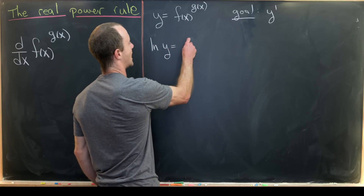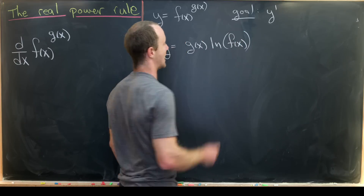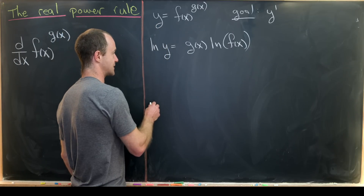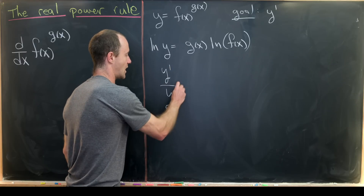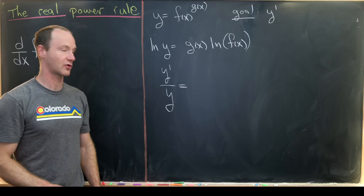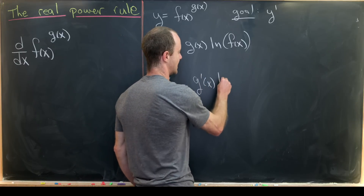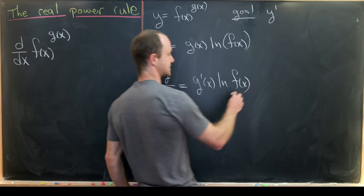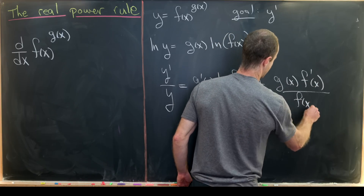So we have the natural log of y equals g(x) times the natural log of f(x). We used a natural log rule there. Now let's take the derivative of both sides. Using the chain rule on the left-hand side, that gives us y prime over y. On the right-hand side, we use a combination of the chain rule and the product rule. Taking the derivative of g(x) first gives us g prime(x) times the natural log of f(x). Then taking the derivative of the natural log of f(x) gives us g(x) times f prime(x) over f(x).